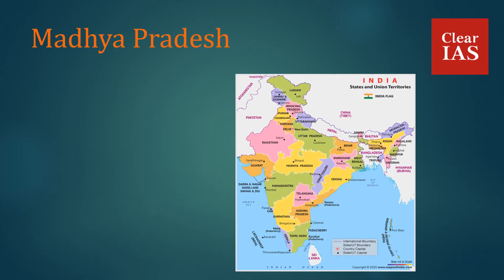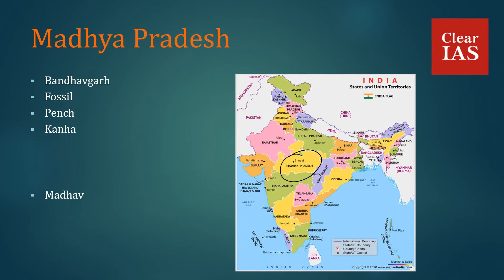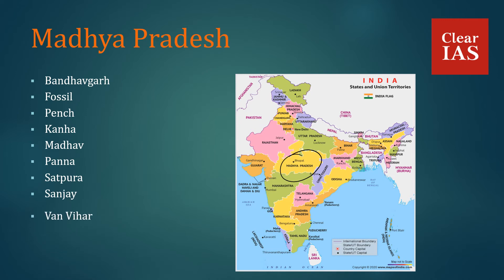In Madhya Pradesh, we have Bandhavgarh, Fossil, Pench, Kanha, Madhav, Panna, Satpura, Sanjay, Van Vihar, Kuno, and Omkareshwar National Park.